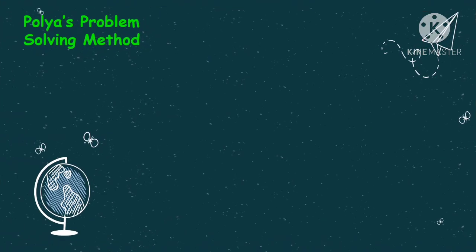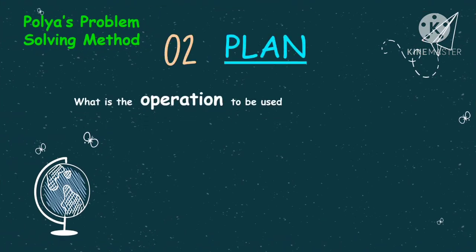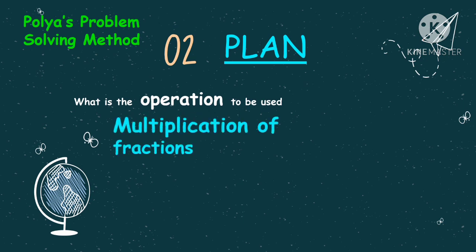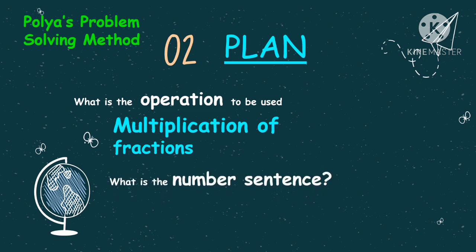The second step is to plan. The operation to be used is multiplication of fractions. The number sentence will be: 20 times three-fifths is equal to N.